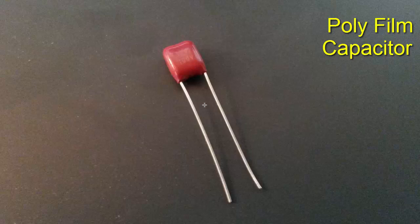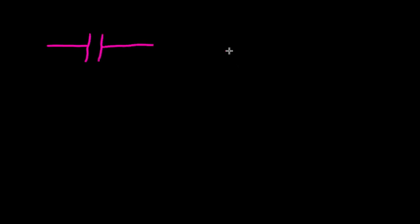Now what do capacitors do and how do they work? Before getting into the explanation, let me show you the schematic symbols for capacitors. There are two main schematic symbols. The first is often used for a ceramic disk capacitor or any capacitor that is not polarized — it doesn't matter which way you connect the leads.